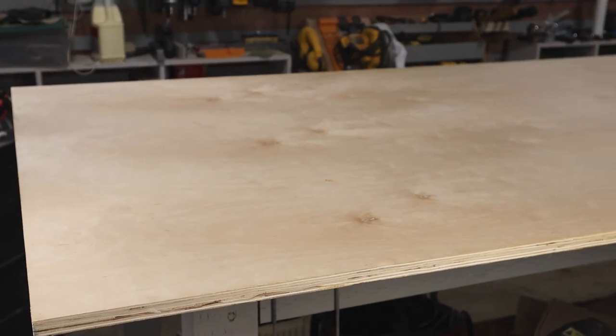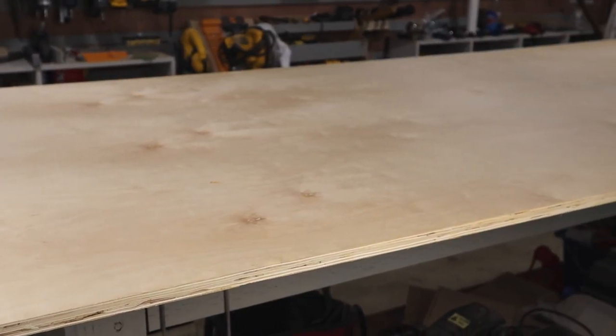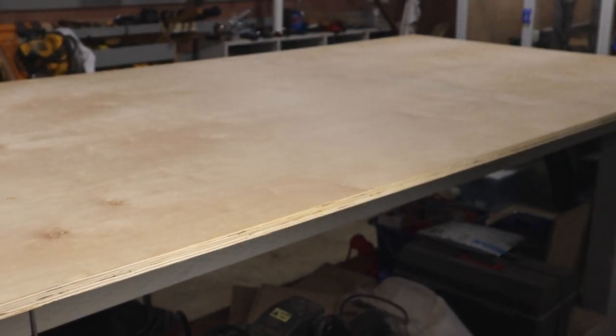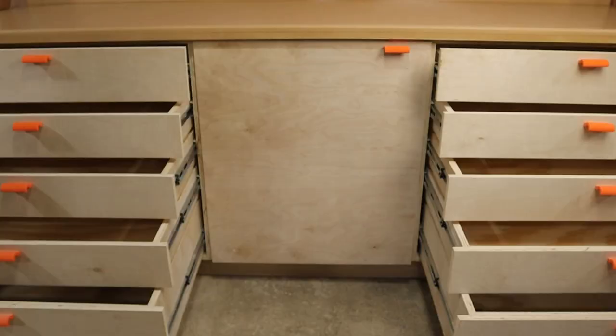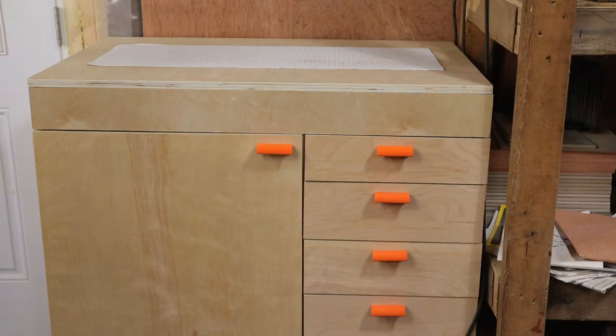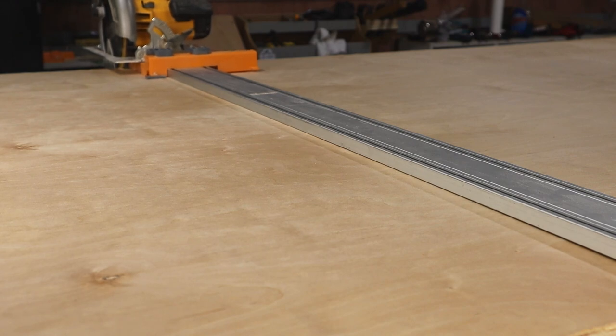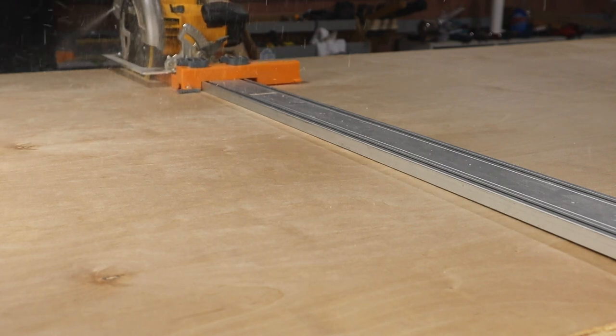I started with a new 4x8 sheet of shop birch. At least that's what they call it where I bought it. This stuff is relatively inexpensive compared to most other sheet goods and I've used it for the cabinets and the downdraft table. When I have a full 4x8 sheet to cut, I like to put it on my workbench with some styrofoam under it and cut it into manageable pieces.